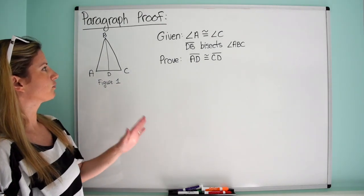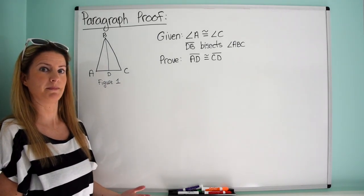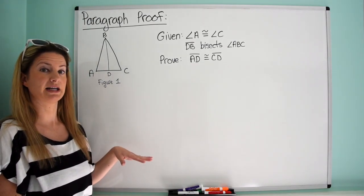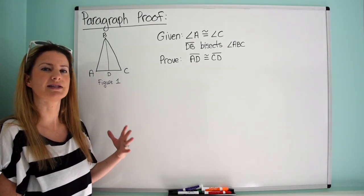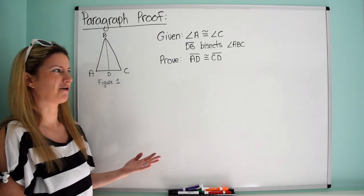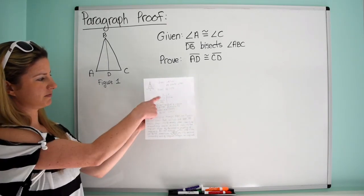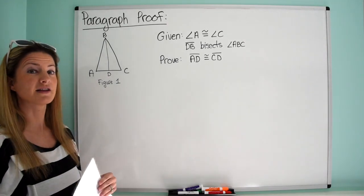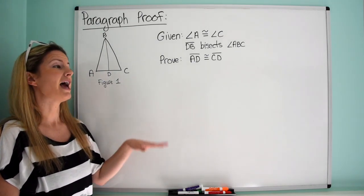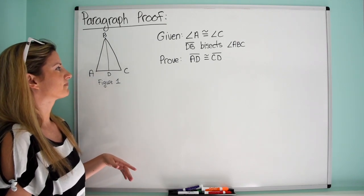This proof is actually one I've already done in two-column form, so it might be good to open that one up and see how we convert it from two-column to paragraph. I actually wrote up the two-column first and then the paragraph underneath, because personally I think two-column proofs are the best — the easiest, the simplest. Whenever I write a paragraph proof, I actually write the two-column first.